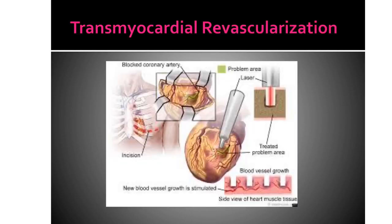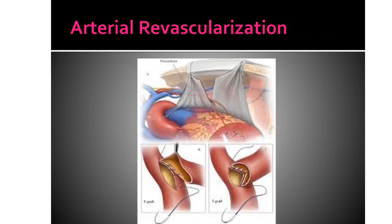Next is transmyocardial revascularization. It is used for clients with widespread atherosclerosis involving vessels too small and numerous for replacement or balloon catheterization. It is performed through a small chest incision using a high-powered laser that creates 20 to 24 channels through the ventricular muscle, providing the affected region of the heart with oxygenated blood. Next is arterial revascularization, done to increase arterial blood flow to the affected limb, indicated for clients with arterial vascular disorders.